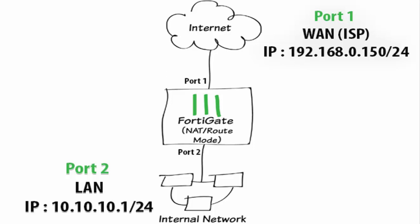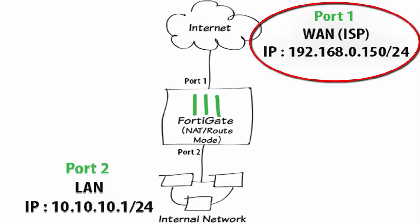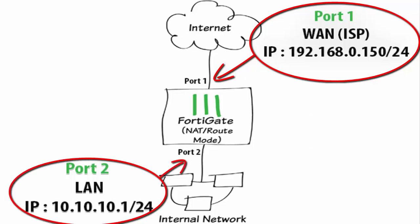If you look at the diagram, we are going to see the internet in FortiGate 48 firewall. We are going to configure the internet and the ISP. The IP is 192.168.0.150/24. We are going to configure port 1 and port 2. We are going to configure the IP 10.10.10.1/24.